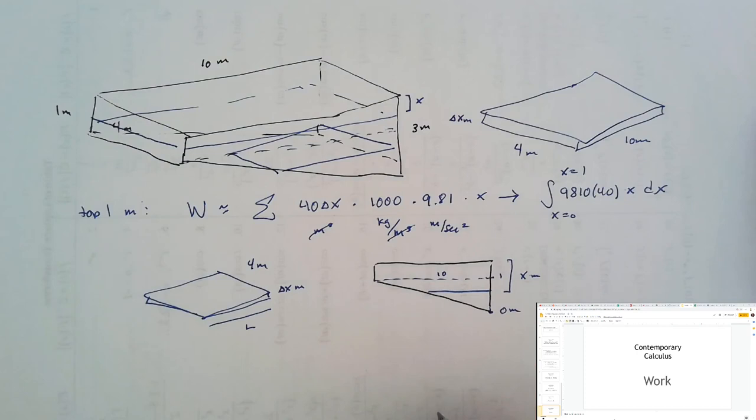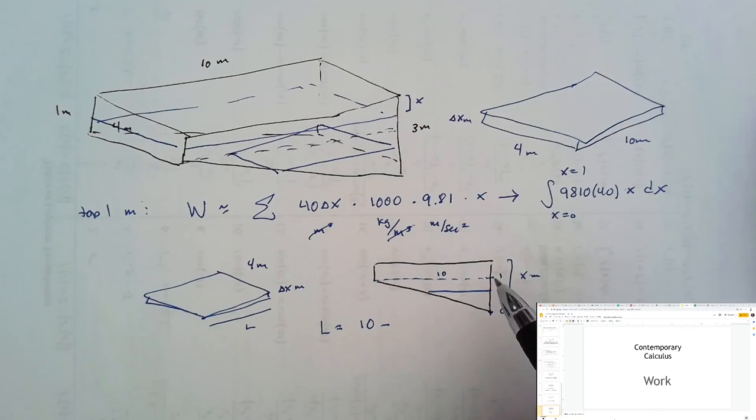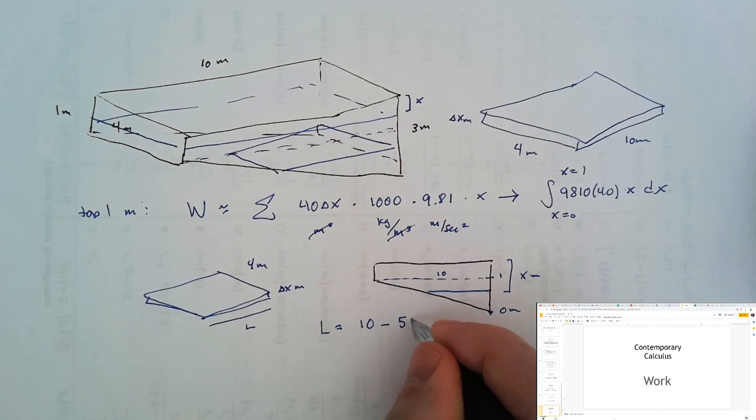So we need a length function that decreases from 10 to 0 over the course of 2 meters. So our length will be 10 minus the rate of change, and we're losing 10 meters of length in 2 meters of depth. So that rate of change would be 5 times x minus 1.